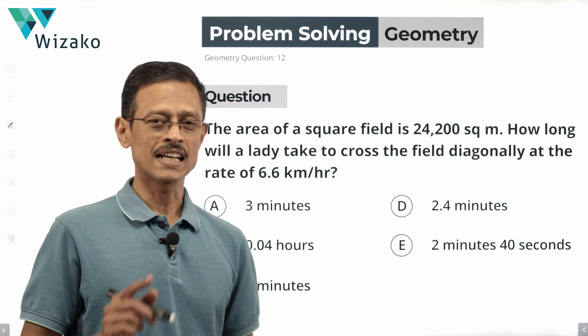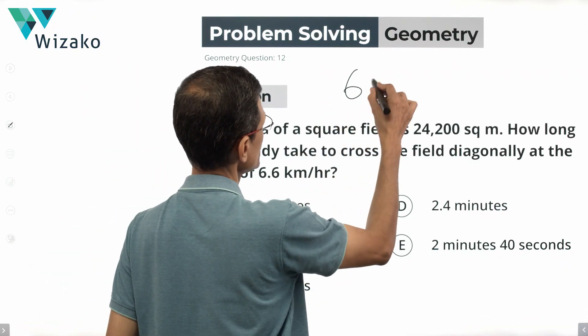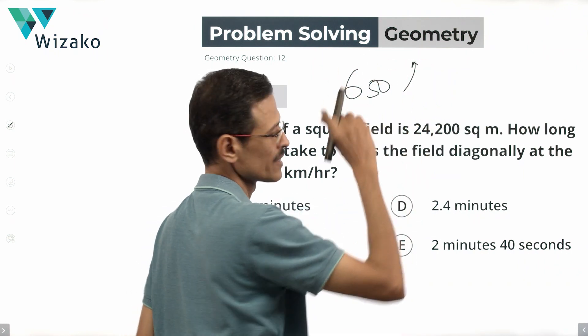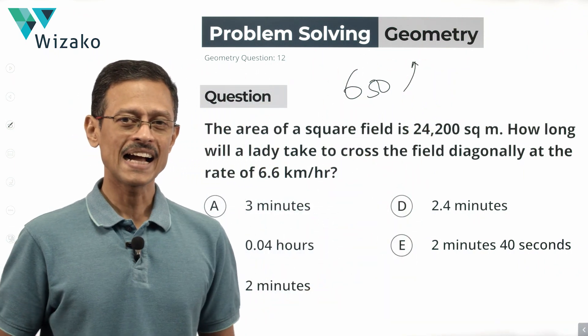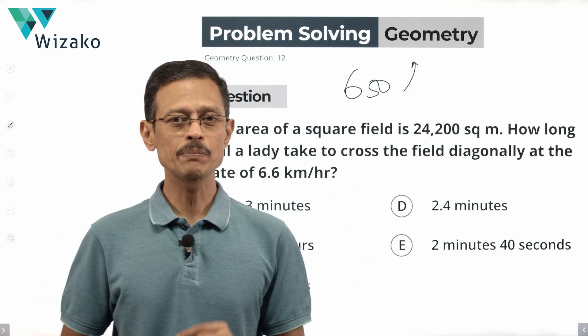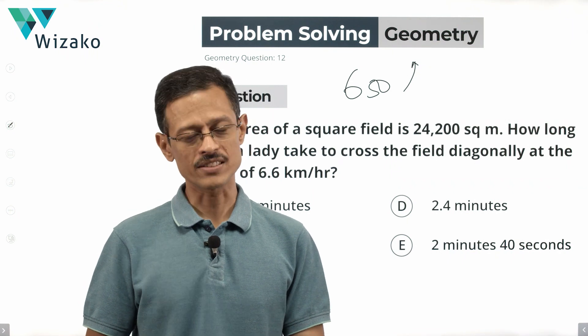It's a medium difficulty question. I'll classify the question as a GMAT 650 level problem-solving question from geometry and it also includes rates, speed, distance, and time as another concept tested.